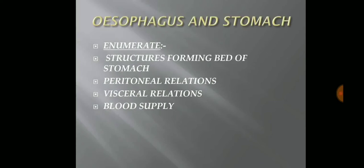Esophagus and the stomach. Esophagus is generally covered in the thorax, and in the BD Chaurasia book, only information about the stomach is given. The various questions you can expect in the enumerate section are: structures forming the bed of the stomach — this is a very, very important question and is generally asked in every exam, both in the semesters as well as in the prof. Peritoneal relations, visceral relations, and the blood supply are generally part of long questions, but they can also be asked as enumerate.